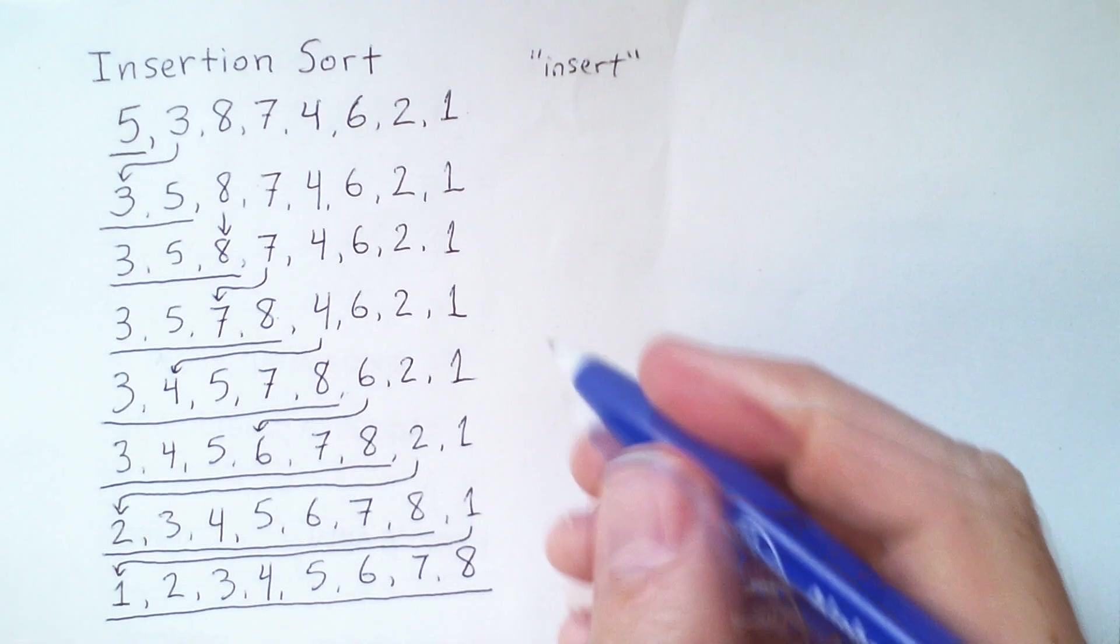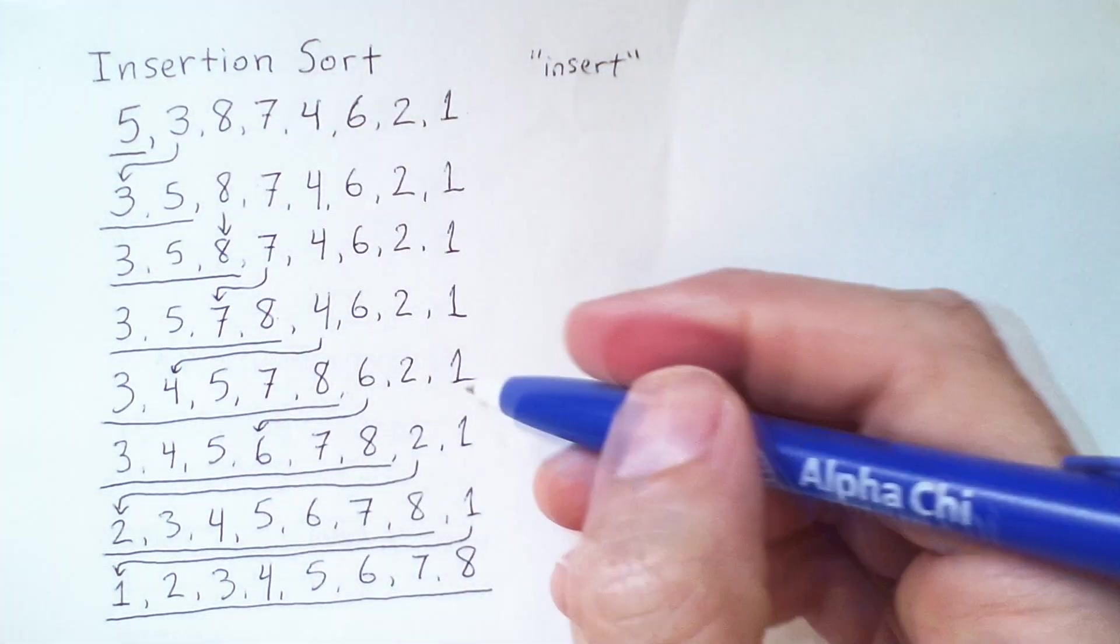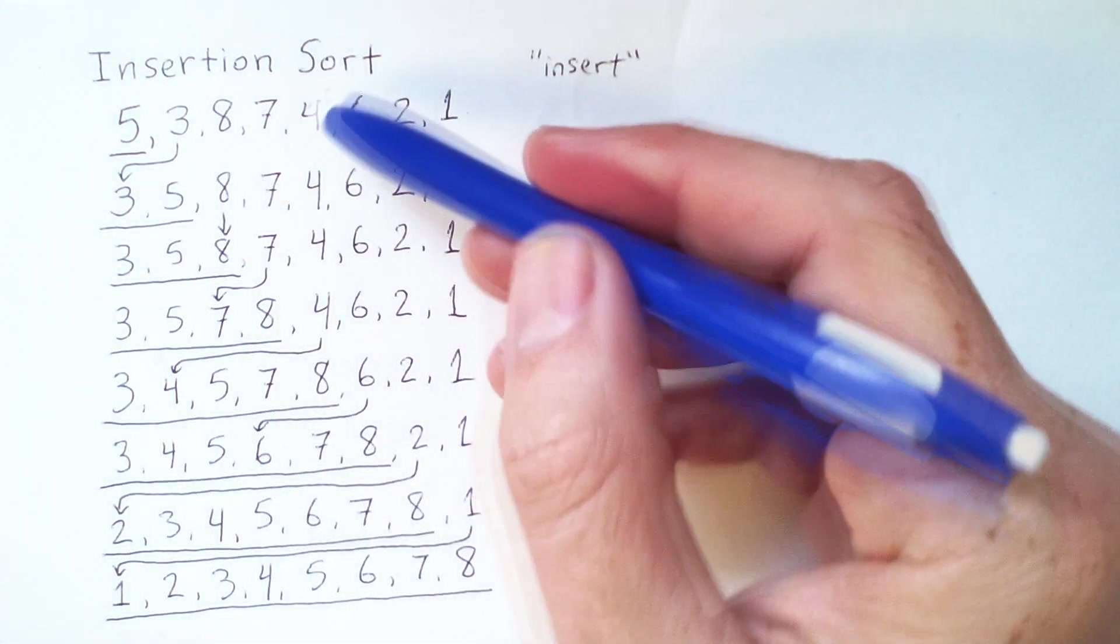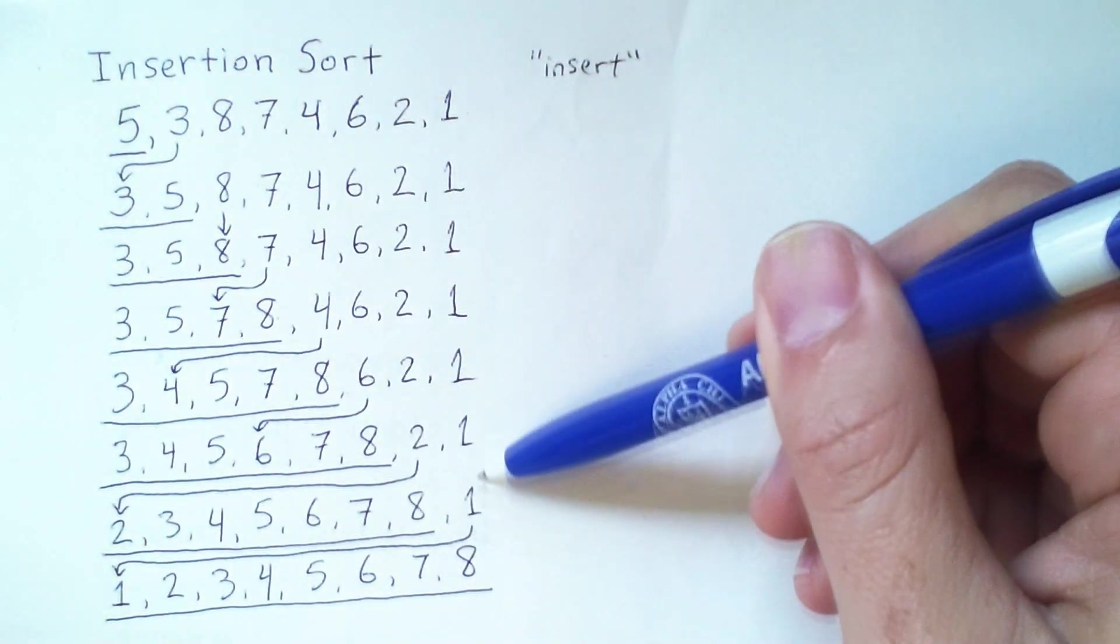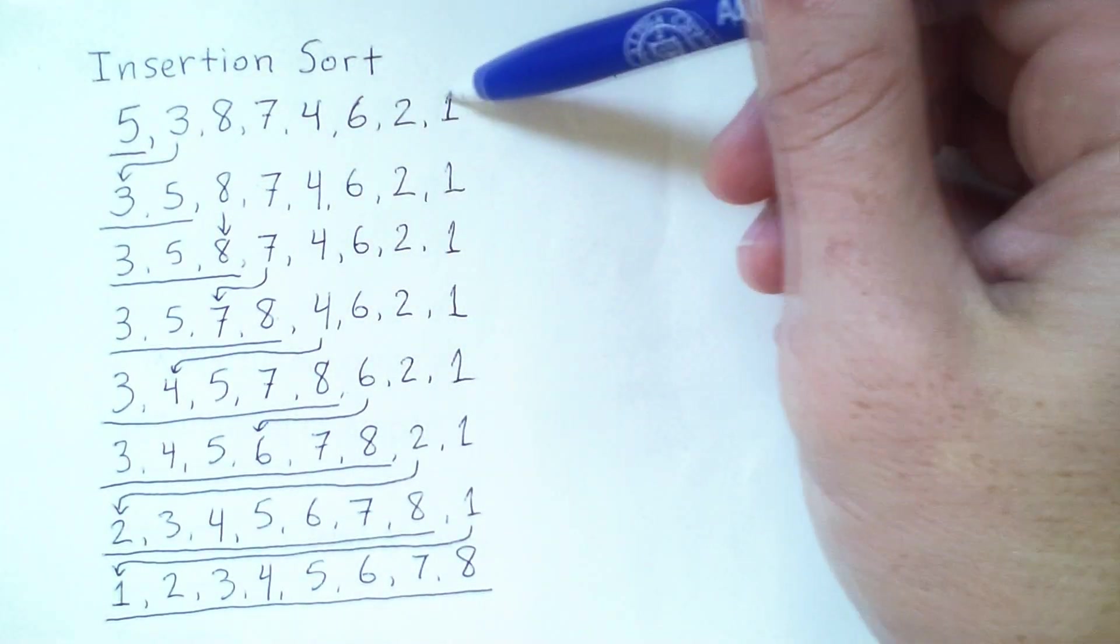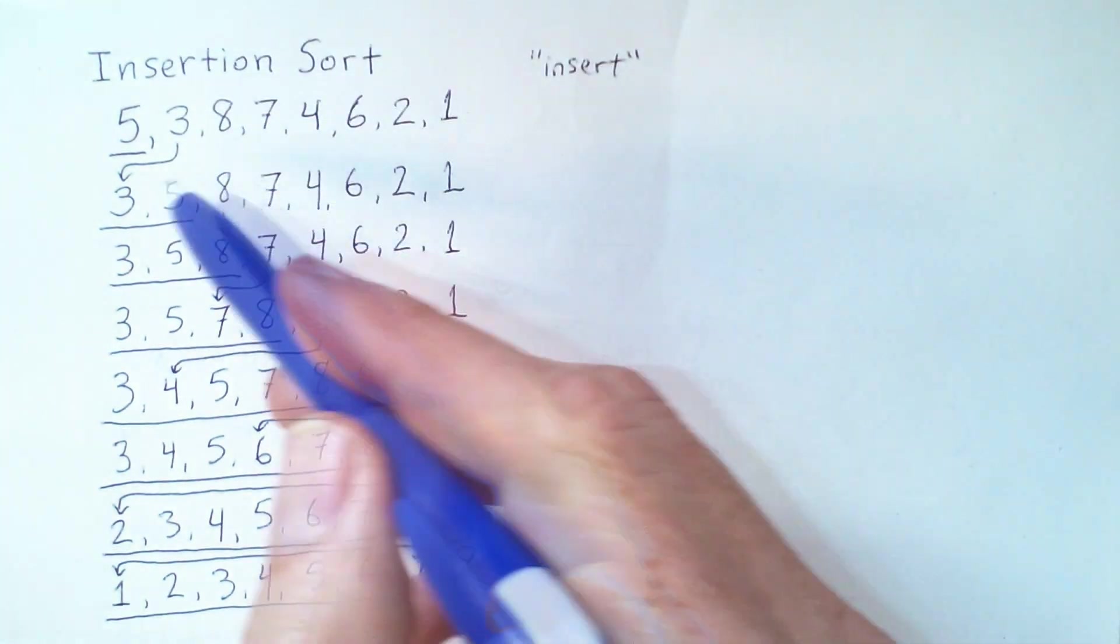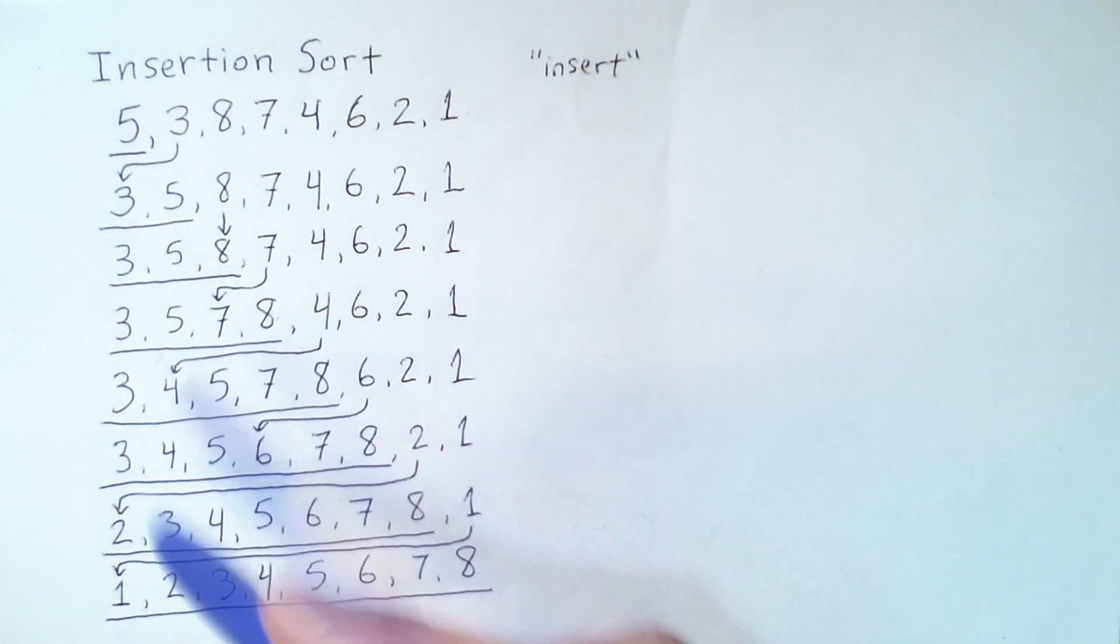And with that, we are done sorting. So at every step of the way, everything in this triangle remained untouched, and only the elements in this area got moved around, shifted.